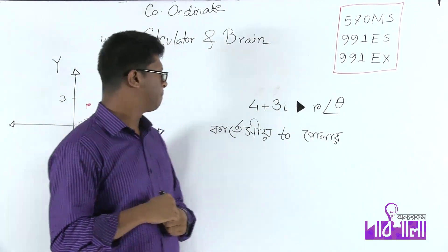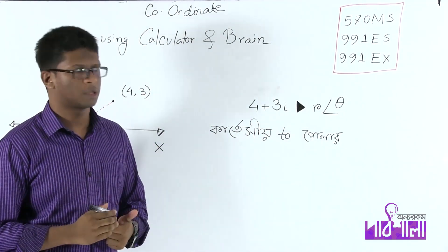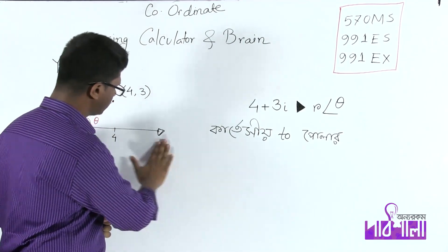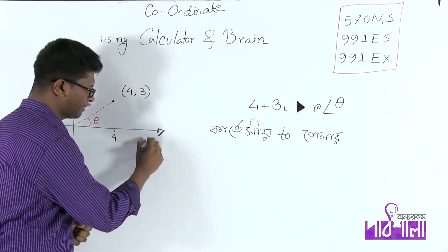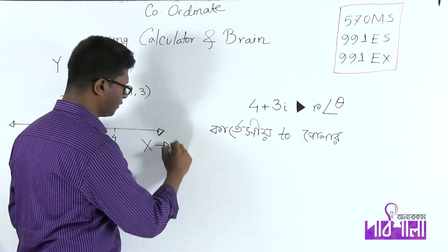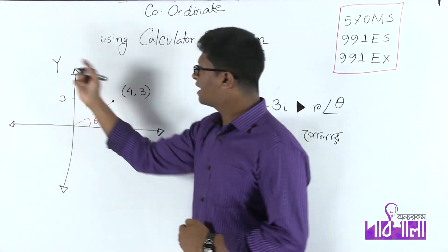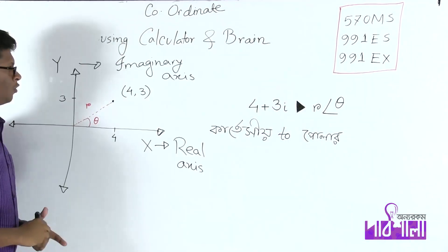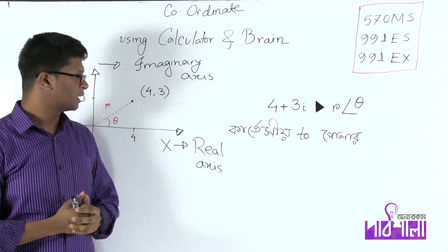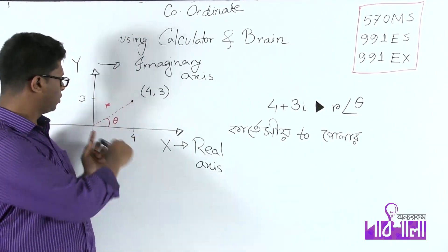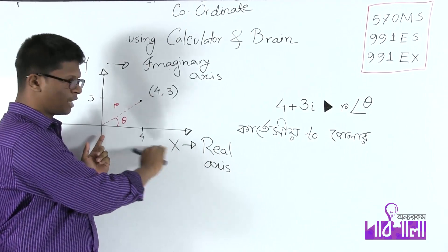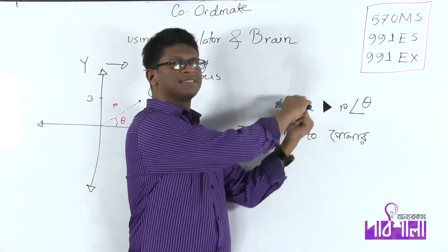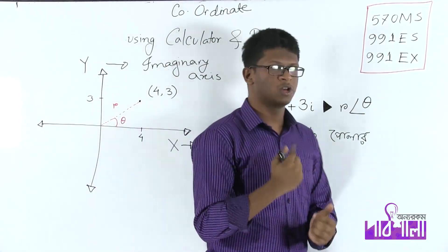It is a complex mode; we are doing this calculation. What is the complex plane? This is the x-axis. The complex plane is the real-axis. The y-axis is the imaginary-axis. We have to describe this point for 4, 3. The real-axis is 4. The imaginary-axis is 3. So, this is 4 plus 3i.